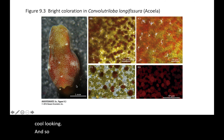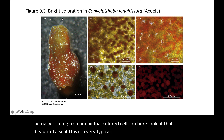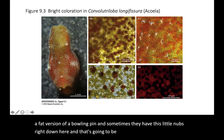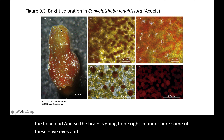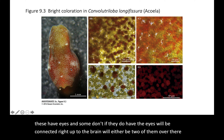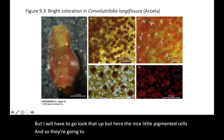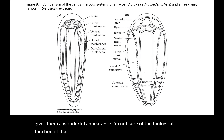Here is the bright coloration — you can see it's coming from individual colored cells. This is a very typical Acoela appearance: they sort of look like a fat version of a bowling pin, sometimes with a little nub at the tail end. The brain is right under the head end. Some have eyes connected right up to the brain — either two eyes or possibly one in the center. The pigment function isn't fully understood; this is a fairly new group with not a ton known.